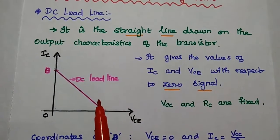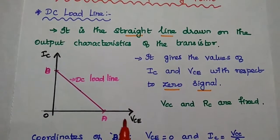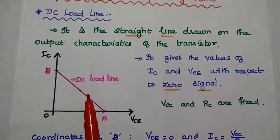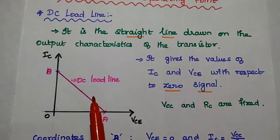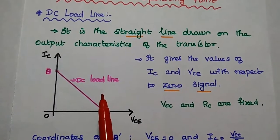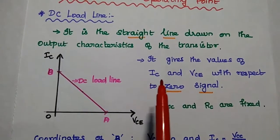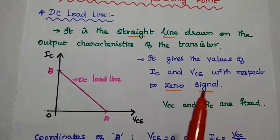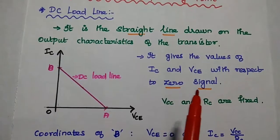We need two points — two coordinates — to make a DC load line. We call this the DC load line because the line is drawn without AC input; it has only DC voltage. It gives the values of output parameters IC and VCE with respect to zero signal, that means without input signal.